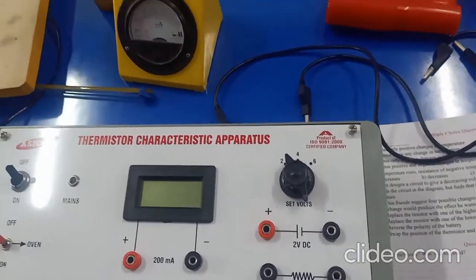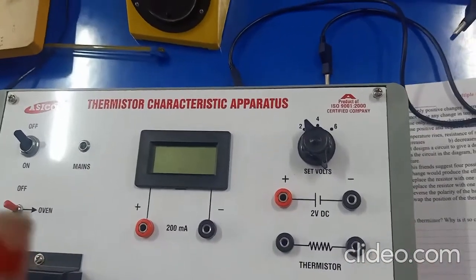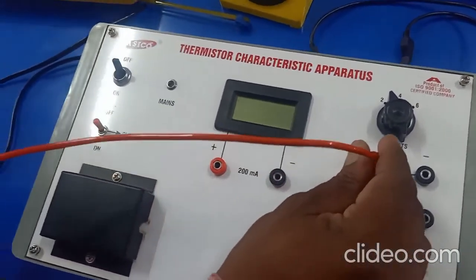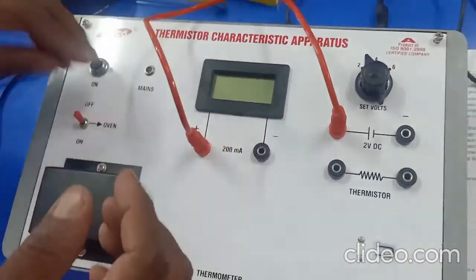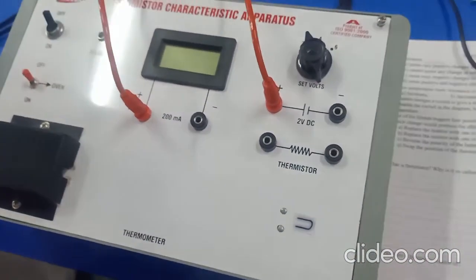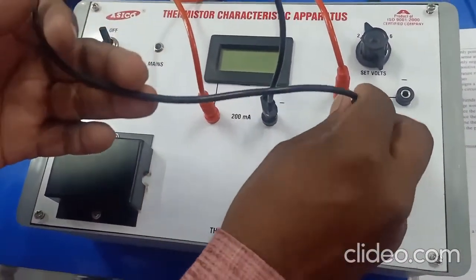First of all, we have to connect the inbuilt milliammeter to the inbuilt thermistor in series. First connection is positive of voltmeter to the positive of milliammeter. The second connection is negative of milliammeter is connected to the one end of thermistor.